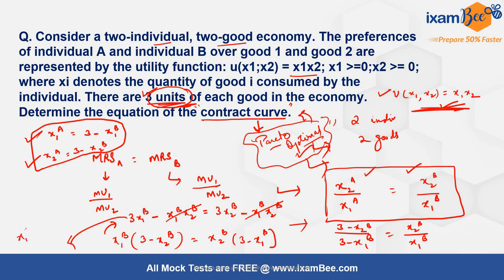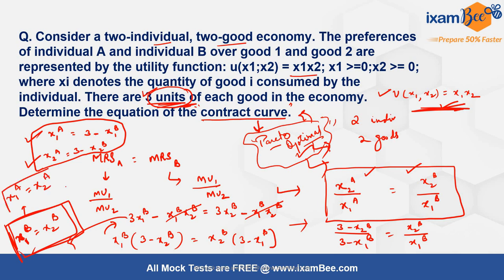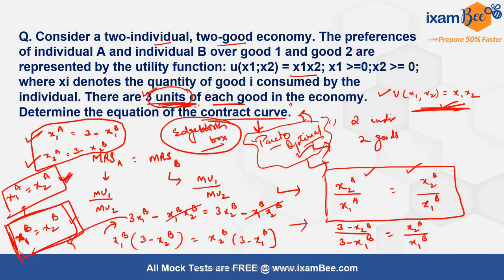This implies x1b = x2b — the amount of good one individual B holds equals the amount of good two they hold. Similarly, x1a = x2a. Since both commodities are present in equal total amounts (3 units each), the Edgeworth box is a square, and the contract curve corresponds to the 45-degree diagonal line of that box.